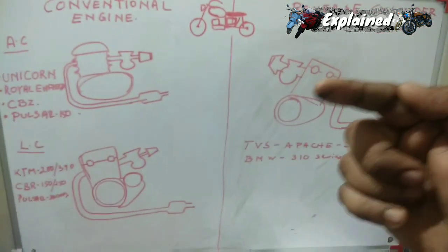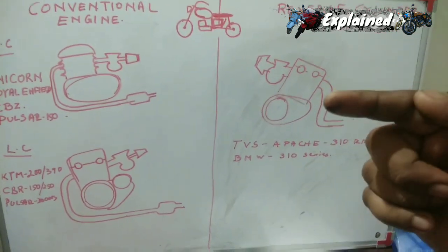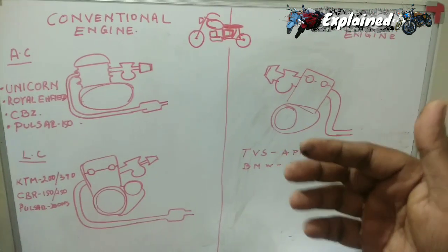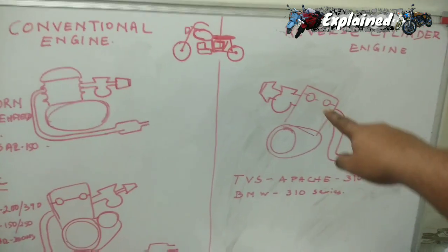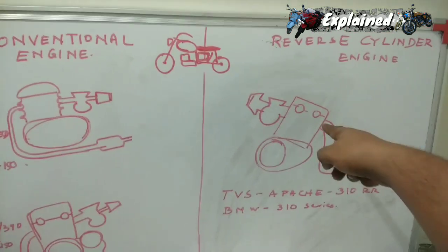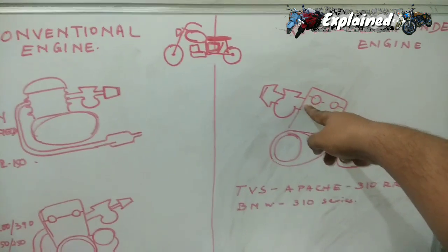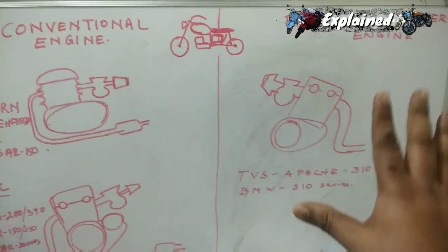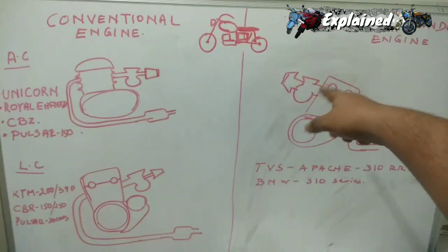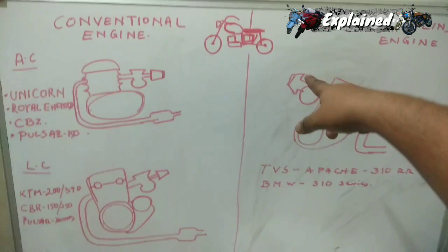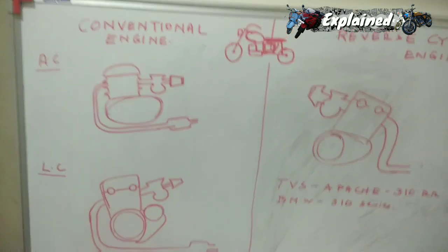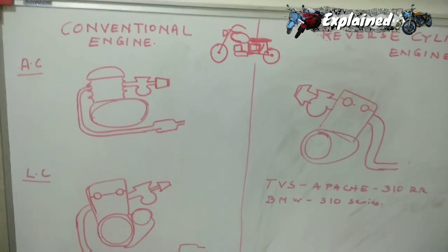In the case of the Apache 310 RR — or for that matter the BMW 310 series which has been recently launched — the exhaust valve is placed at the rear of the engine and the inlet valve is placed at the front. That's very much possible if you are building an engine from scratch, and hence the carburetor or fuel injector is placed in front.